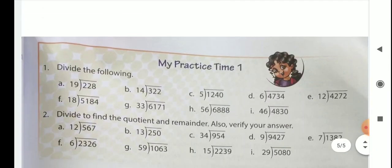Then children, comes to my practice time. Number 1. Divide the following. A, B, D is 3 digits divided by 19. B also same. And C, B, D is 4 digits divided by 5, means 1 digit. You divide. So just follow the steps and find out the division.